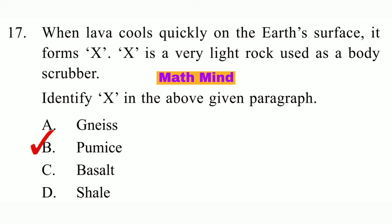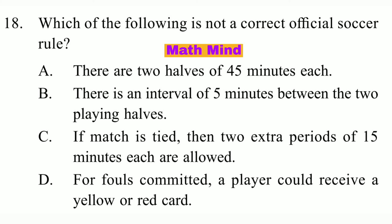Question No. 18. Which of the following is not a correct official soccer rule? Option B is correct: There is an interval of five minutes between the two playing halves.